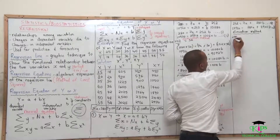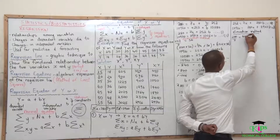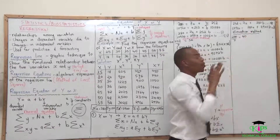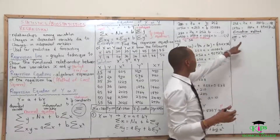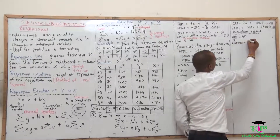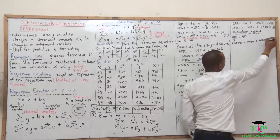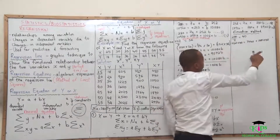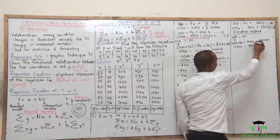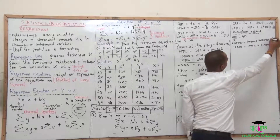So the whole of equation 1 is multiplied by 40 to eliminate A. That gives us: 252 multiplied by 40, equal to 7 multiplied by 40 plus 280 multiplied by 40. So 10,920 equals 280A plus 11,900B. Remember these coefficients are for B.